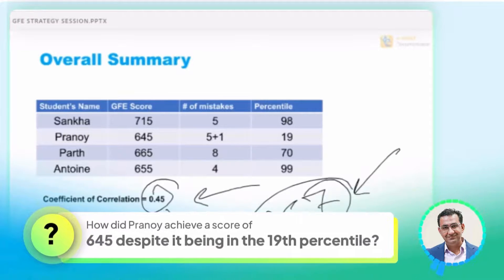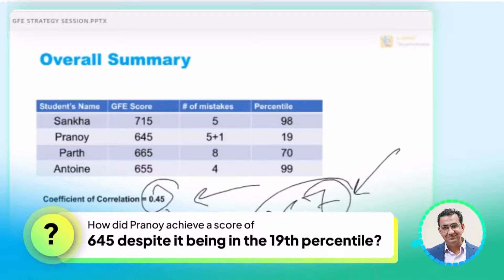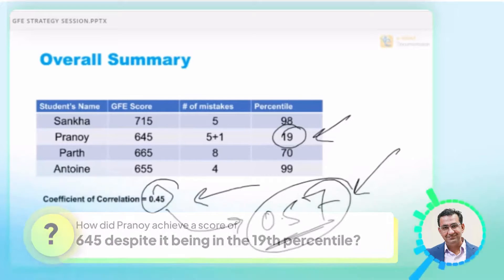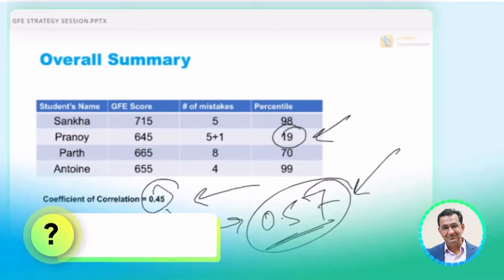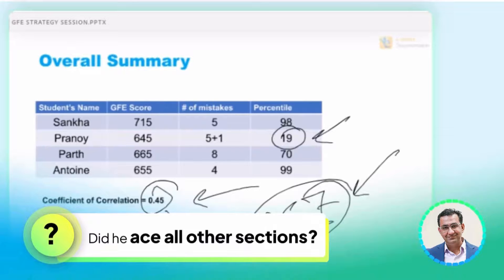How did Pranoy get 645 even though he had a 19th percentile? How do you think he got it? Great question. Mathematically, how do you think he got this? It's a great question. Good observation. You're looking at data and yes, he has the other sections. Absolutely. He has quant, he has DI.